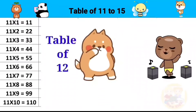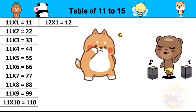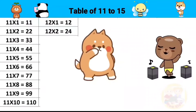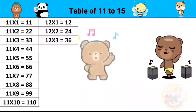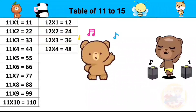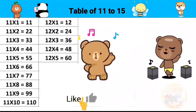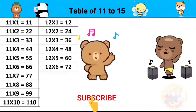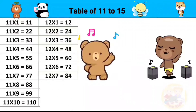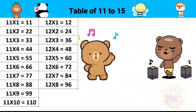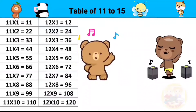Table of 12. 12 ones are 12, 12 twos are 24, 12 threes are 36, 12 fours are 48, 12 fives are 60, 12 sixes are 72, 12 sevens are 84, 12 eights are 96, 12 nines are 108, 12 tens are 120.